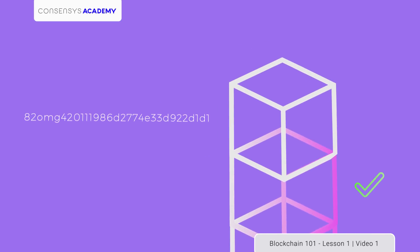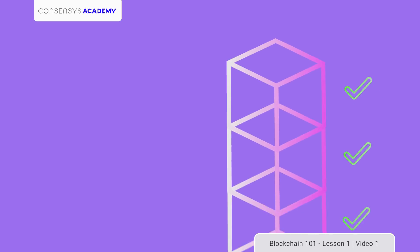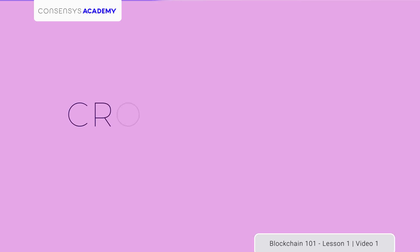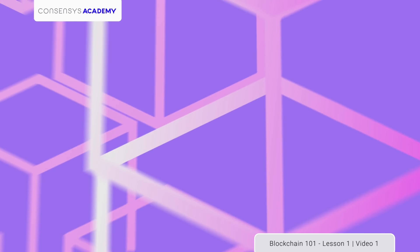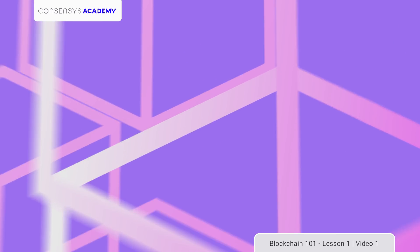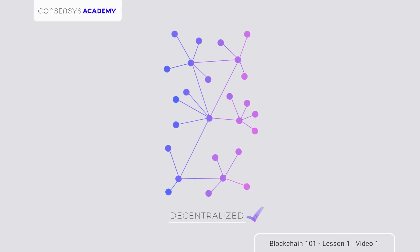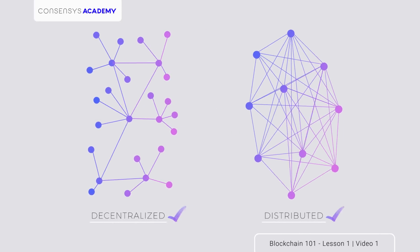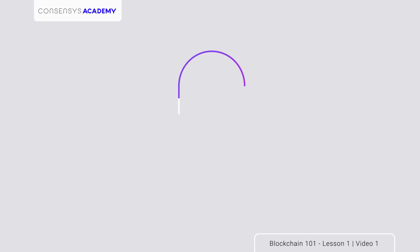To ensure the ledger can't be counterfeited or changed, each individual transaction on the blockchain relies on a form of math called cryptography, which makes the system more secure by making it extremely difficult to corrupt. So it's a decentralized, distributed database that's also cryptographically secure.